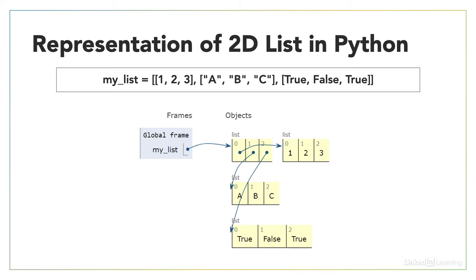Now index 0 of that first list is pointing to another list which contains the integers 1, 2, and 3. Index 1 of that first list is pointing to another list which contains a, b, and c.